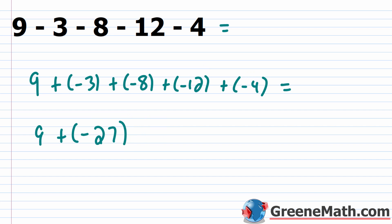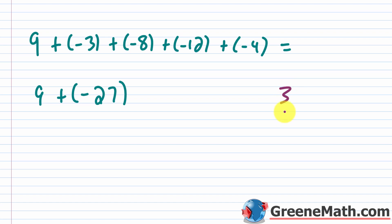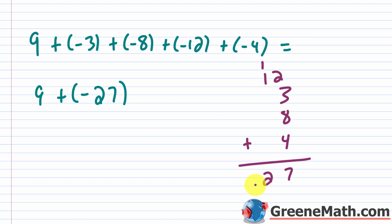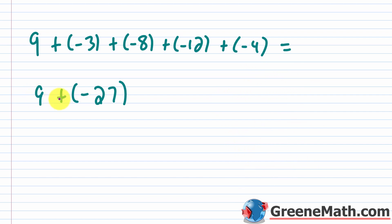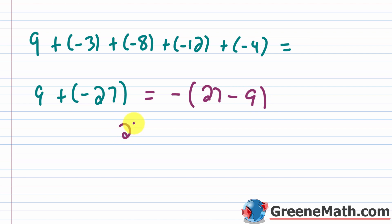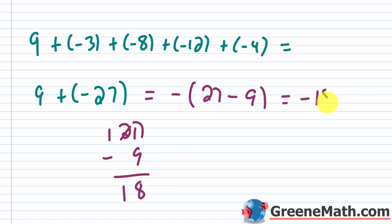Let me show the addition for those not using a calculator: 3 plus 8 plus 12 plus 4 — 2 plus 3 is 5, 5 plus 8 is 13, 13 plus 4 is 17, put 7 down carry the 1, 1 plus 1 is 2, so that's 27. Now we have 9 plus negative 27. The result is negative because negative 27 has the larger absolute value. Then 27 minus 9: borrow to get 17 minus 9 is 8, bring down the 1, giving 18. So the final answer is negative 18.